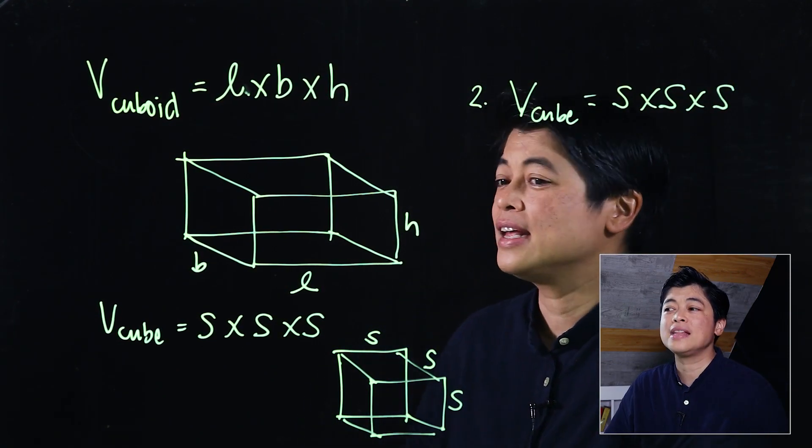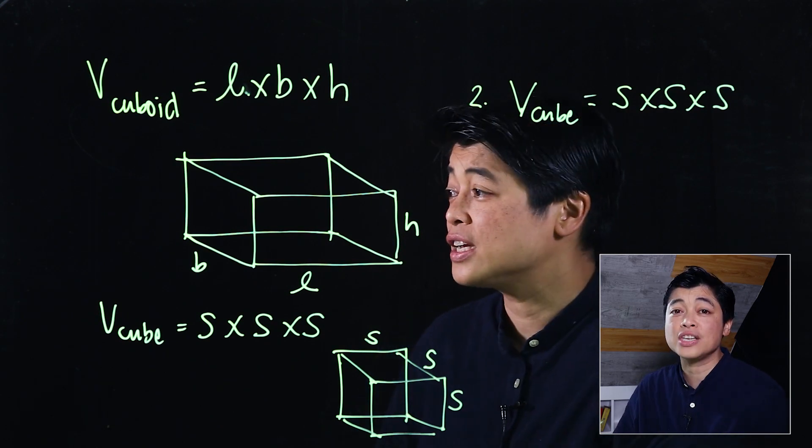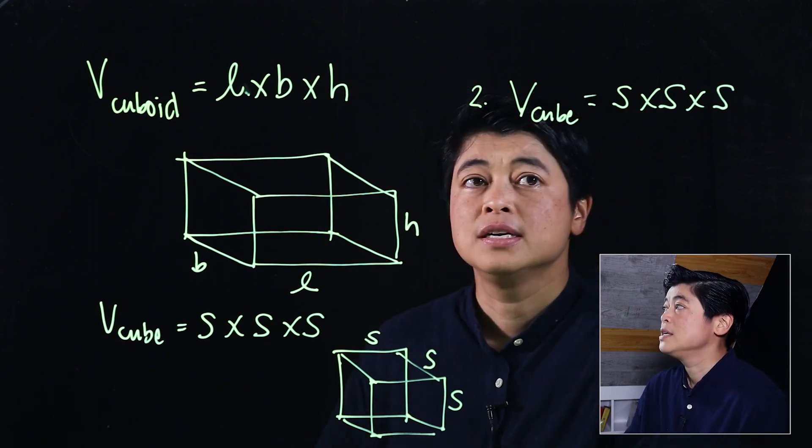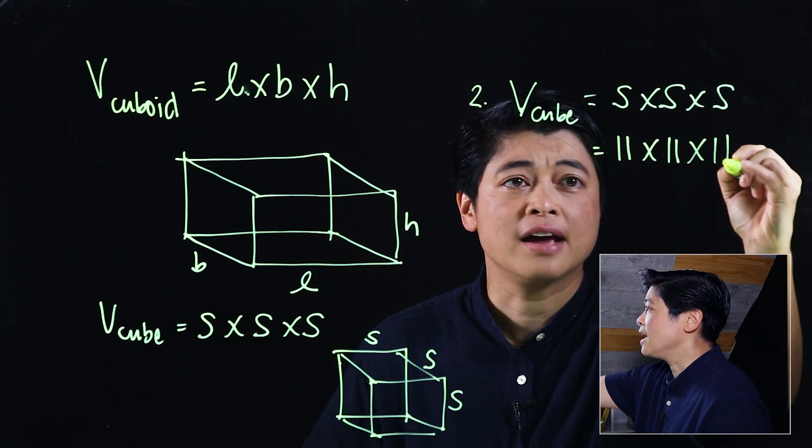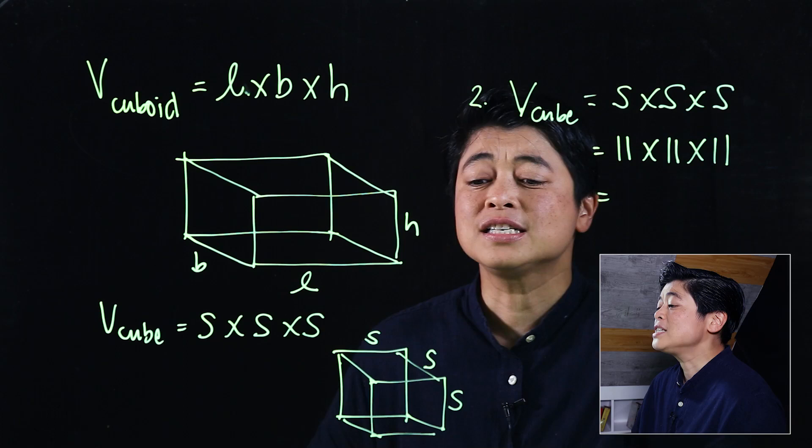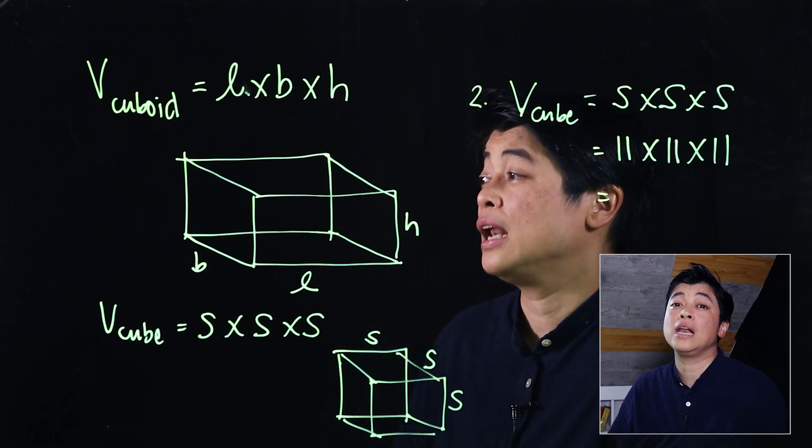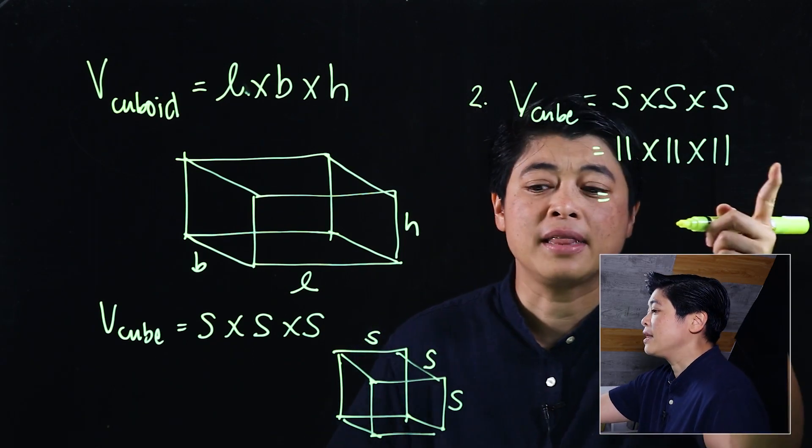They say that the side or the edge is 11 meters, so that means this will be 11 times 11 times 11. Assuming that the kids are allowed to use their calculator, when you multiply that out, it's 1331.